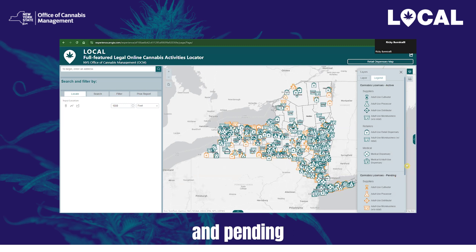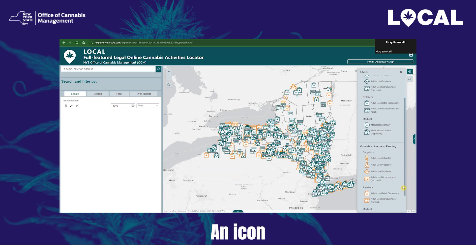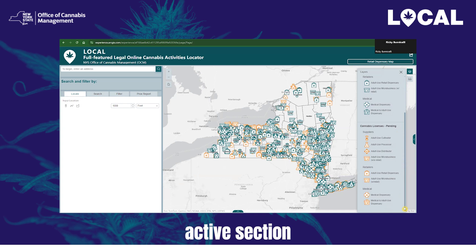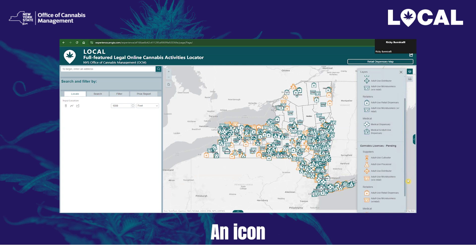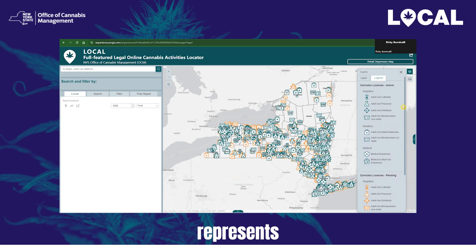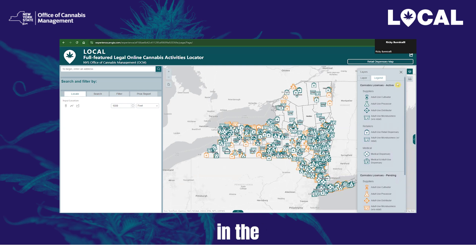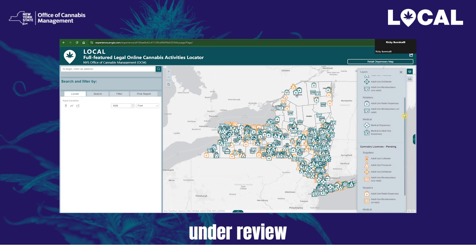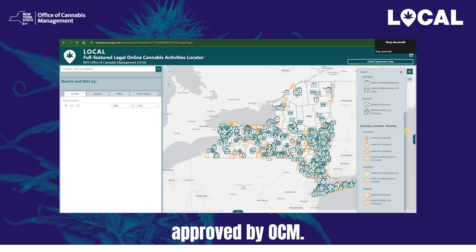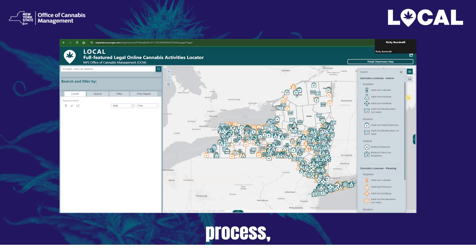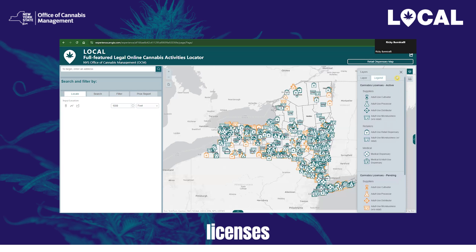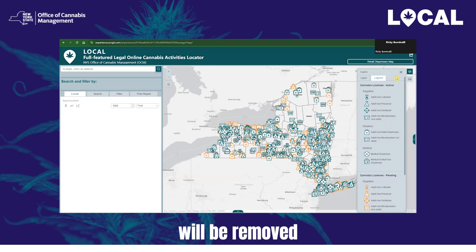At launch, only the active and pending layers will be present. An icon in the active section of the legend represents a licensed application. An icon in the inactive section represents a licensed application that has reached a terminal status. An icon in the pending section represents applications currently under review that have had the location section approved by OCM. Please note, as these applications make their way through the process, those granted licenses will appear in the active section, and those that are denied, withdrawn, or void will be removed from the map.